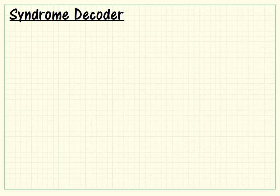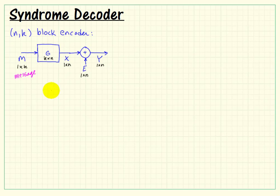Let's talk about the general approach used to perform syndrome decoding. By way of review, remember our (n,k) block encoder used a generator matrix G to convert a message into a codeword. As it passes through the channel, one or more, or hopefully none, but some bit errors are likely to get introduced, and so we call the specific error pattern the error vector.